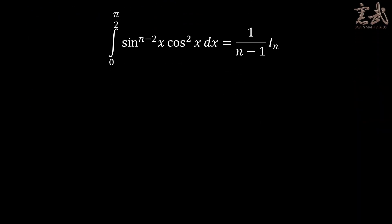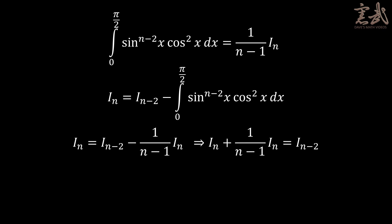We now substitute back into the original formula for Iₙ. This gives us Iₙ equals Iₙ₋₂ minus 1/(n−1) · Iₙ, which implies that Iₙ plus 1/(n−1) · Iₙ equals Iₙ₋₂.